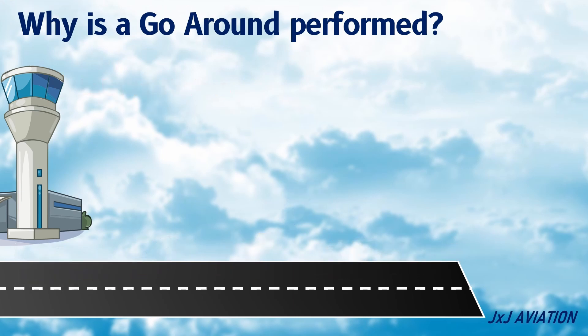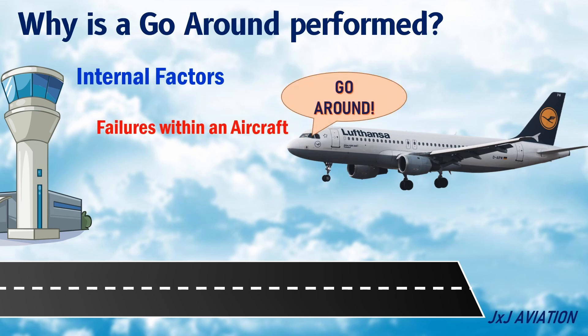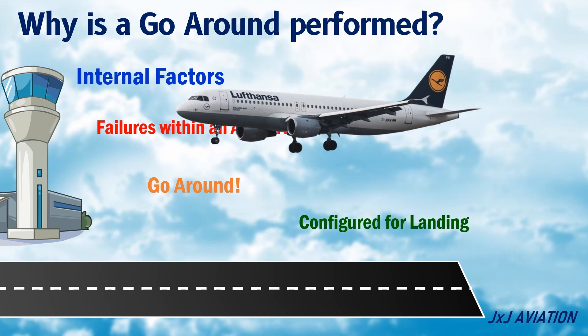The internal factors refer to any failures within an aircraft which can have an impact on the safe landing. Generally, an aircraft should be configured for landing before it reaches a particular altitude while descending. If the aircraft is not stabilized for landing at this altitude, a go-around has to be performed.